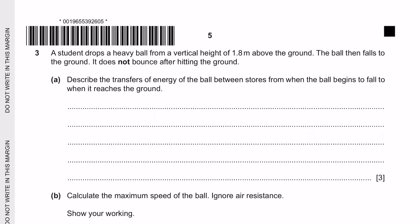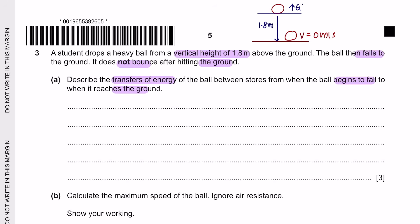Question 3. A student drops a heavy ball from 1.8 m above the ground. The ball falls and does not bounce, so its final velocity is 0 m/s. Part A asks for the energy transfers. At its highest point, the ball stores maximum gravitational potential energy. As it falls, GPE converts to kinetic energy, which increases as it descends. When it stops, all energy transfers into thermal energy — so the ball's surface feels warm.